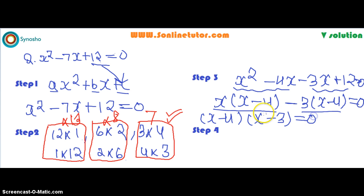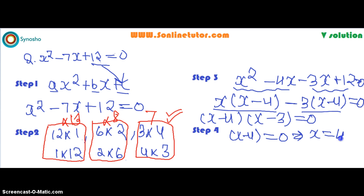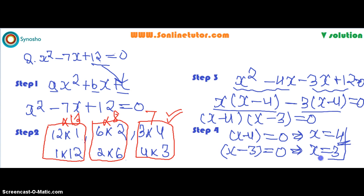At the last step, find out the value of x. Compare each factor to 0. So x minus 4 equals 0 gives x equals 4. And x minus 3 equals 0 gives x equals 3. These are the two possible solutions of this quadratic equation.